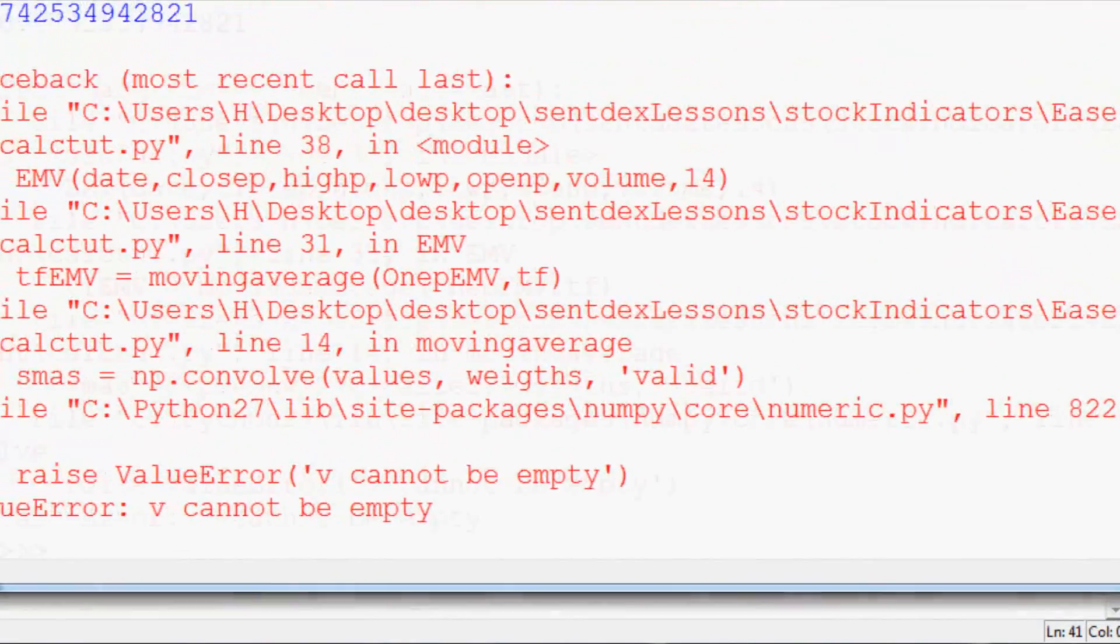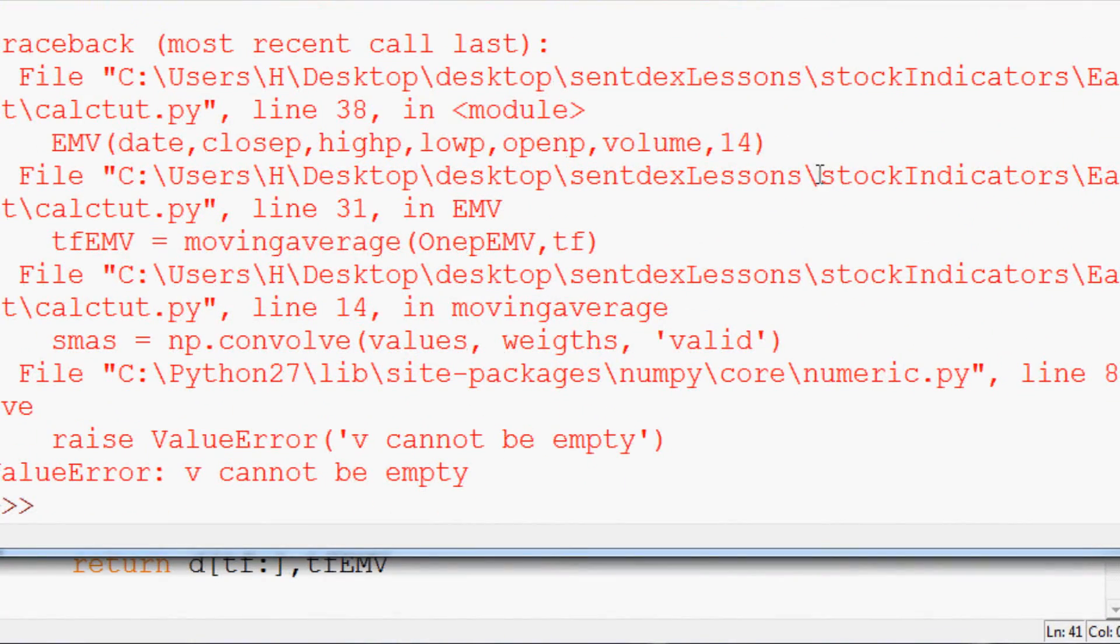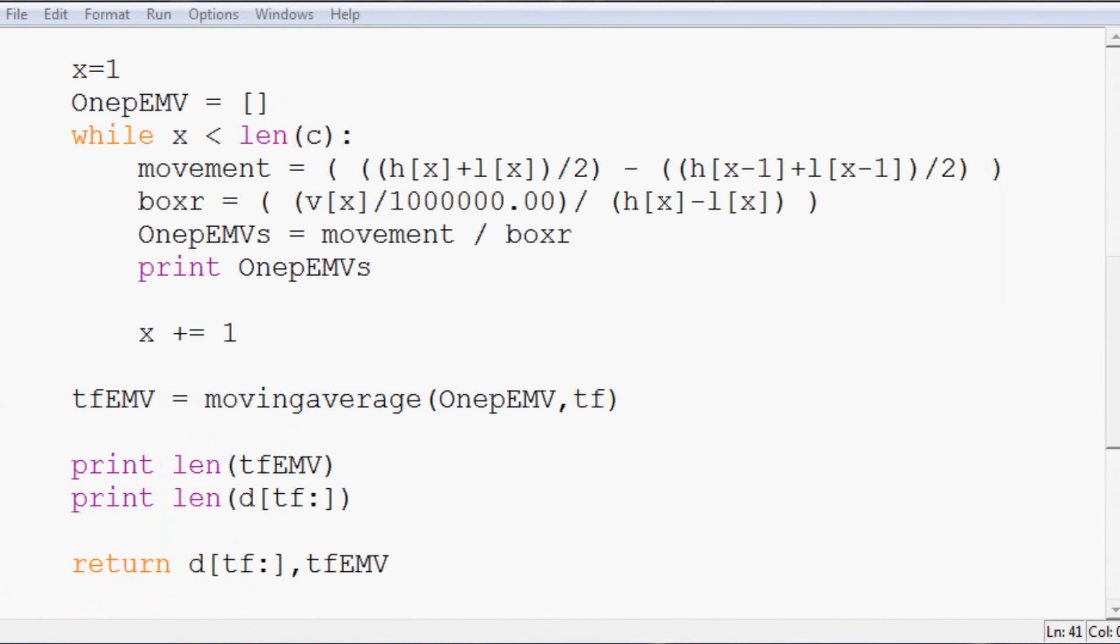I'm going to go ahead and pause this for a second and see if I can't figure it out because I'm staring at this and I don't really see it. It's throwing back at me a couple of different things. Then it's throwing back this for the moving average and then it's raising the value error of v can't be empty. I'm not really sure what v has anything to do with tf emv.